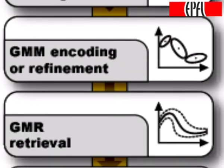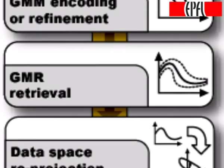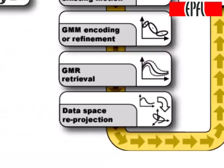Gaussian mixture regression is used to reconstruct a general form for the signals. Finally, the retrieved data are projected back in the original data space.